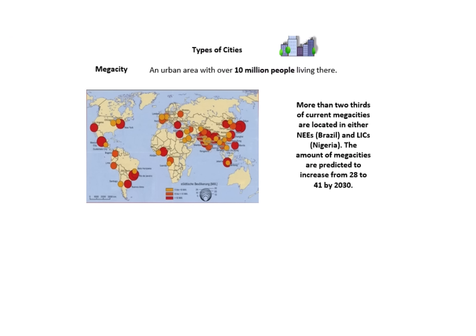It's important to note that you have different types of cities. The key one to be familiar with is a megacity — an urban area with 10 million people living there. A millionaire city has 1 million people, and a world city is one with financial or worldwide importance. A city can be both a megacity and a world city. More than two thirds of current megacities are in NEEs and LICs, with the biggest growing ones in Brazil and Nigeria.